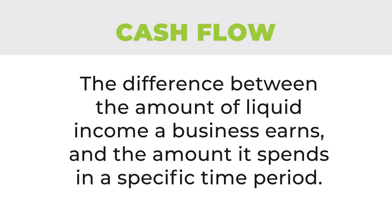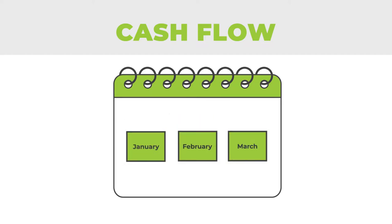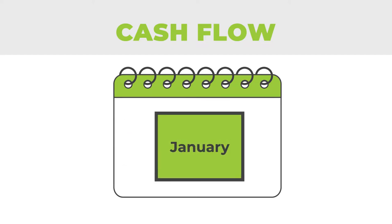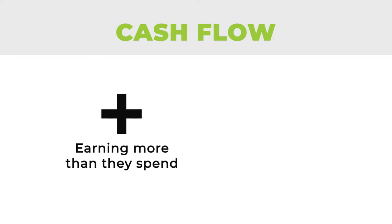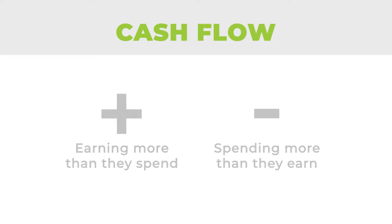Cash flow is the difference between the amount of liquid income a business earns and the amount it spends in a specific time period. It is a key indicator of a business's financial health. Cash flow is measured over a set amount of time — yearly, quarterly, monthly, and so on. It is expressed in a dollar amount: a positive number for companies earning more than they spend, and a negative number for companies spending more than they earn.